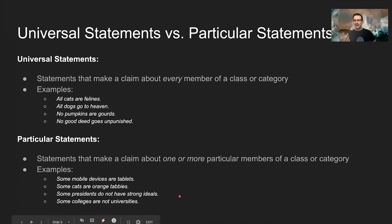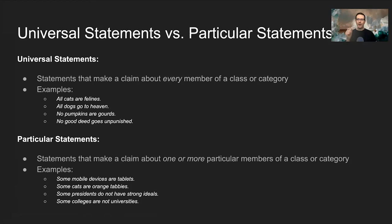There can also be negative particular statements — for example, 'some presidents do not have strong ideals.' This is not making a claim about all presidents; it makes a claim about one or more particular presidents. Similarly, 'some colleges are not universities' is a particular claim about one or more specific colleges. That's the fundamental distinction: universal statements make claims about every member of a category, while particular statements make claims about one or more specific members.